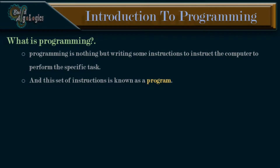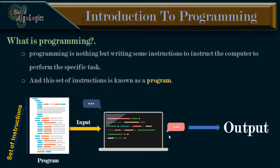But we also have application level programs — for example, a music player which is used for playing music. What I am basically trying to say is that whatever actions are performed by the computers are nothing but programs only. Consider the following diagram. Here, this is nothing but a set of instructions written in any programming language. This whole set of instructions or a file is known as a program. The computer will take this program as an input, execute it, and finally produce some output.